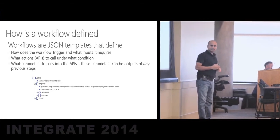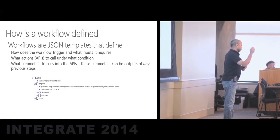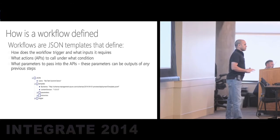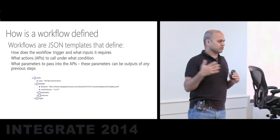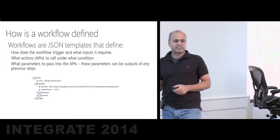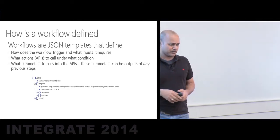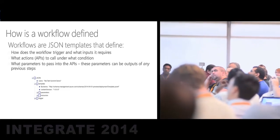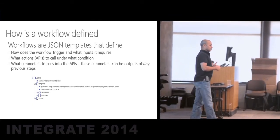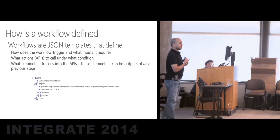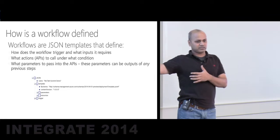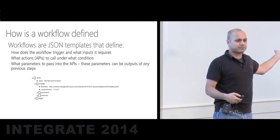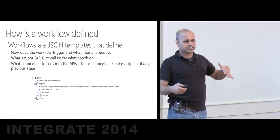Now let's look at how workflow definitions are stored. All workflows are saved in a JSON format — you can write it manually or use the visual designer. There are three primary sections in the JSON: first, what triggers the workflow and what input is required; second, what APIs the workflow calls — the actions in sequence; and under what condition each API is called — the dependency graph. Shape C depends on B, B depends on A. Third, what inputs each API requires, which can reference outputs from previous steps. Once you provide this definition, the engine executes accordingly.